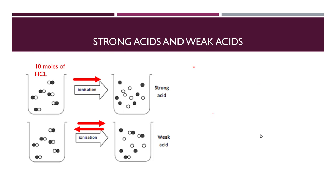Before discussing the acidic and basic nature of amino acids, we should understand the difference between a strong acid or base and a weak acid or base. Looking at HCl — a really strong acid — 10 moles of HCl produces 10 moles of protons and 10 moles of chloride ions, meaning it dissociates 100%. That's why the reaction is shown by one arrow, not two arrows.